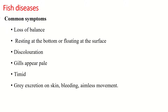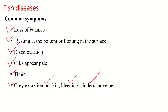Fishes which are diseased can become restless, there is a loss of balance, and the fish is incapable of maintaining its position in the water column. The fish tends to lie or rest at the bottom, or floats at the surface. Discoloration patches are found on the body, tails and fins do not function normally, gills appear pale, a timid condition is found in sick fish, gray excretion on skin, sometimes bleeding, and aimless movements.